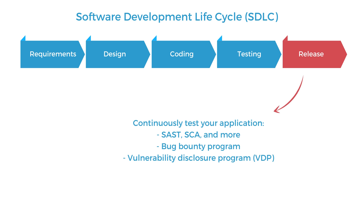Finally, after the testing phase, you release your application. After release, you can build in routine security tests like dependency monitoring tools and static analysis tools so that the application can be monitored even after it's released to the public. You can also consider starting a bug bounty program or a vulnerability disclosure program to let third-party security researchers safely report security bugs in your application.